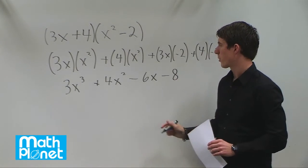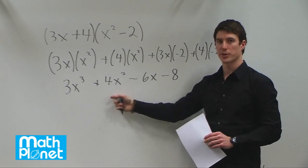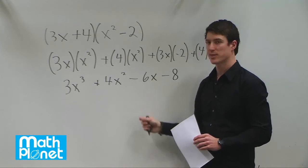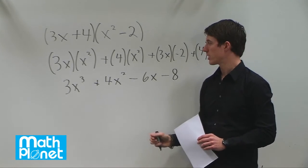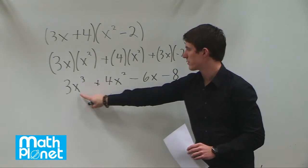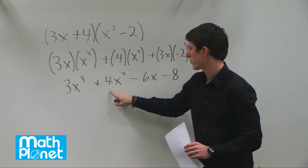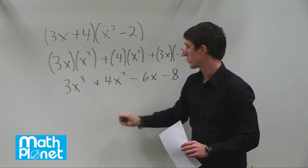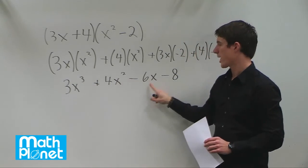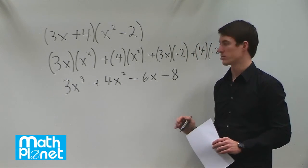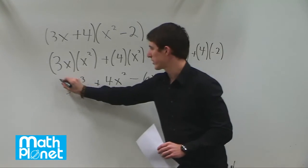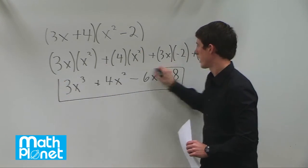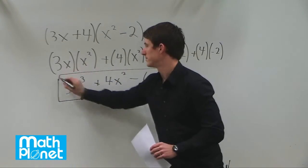At this point we want to stop and see if the cross terms can add together to simplify any further. But we can see that they can't — each term has a different factor: x cubed, x squared, x, and a constant. So this is expanded and simplified as much as we can.